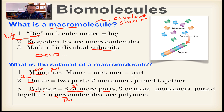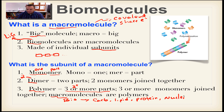Macromolecules — also called biomolecules — are all polymers. Our biomolecules are carbohydrates, lipids, proteins, and nucleic acids like DNA and RNA. Every one of these is a polymer; they are each made up of subunits connected together.